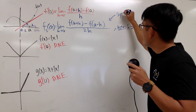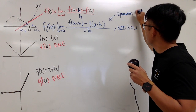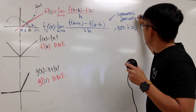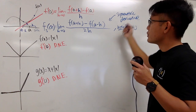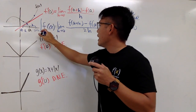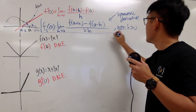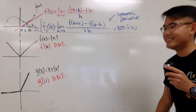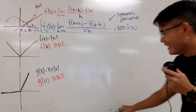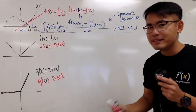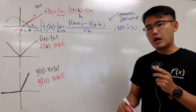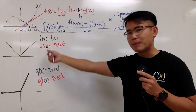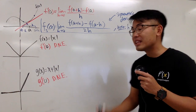So let me write this down. The symmetric derivative of the function at some point a. Let's see what good this does — are we actually going to get a derivative for absolute value? Let's check that out.